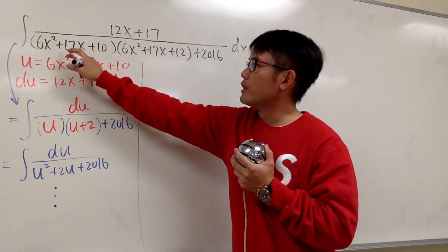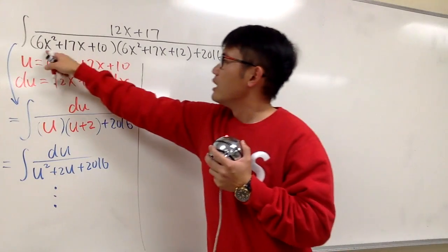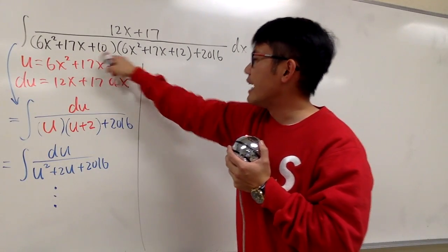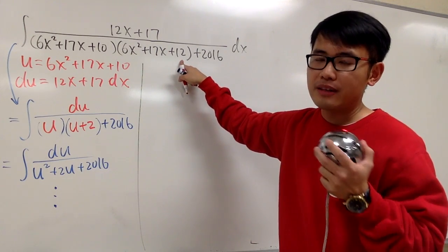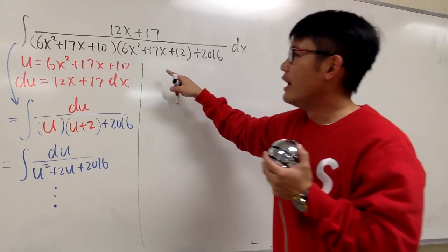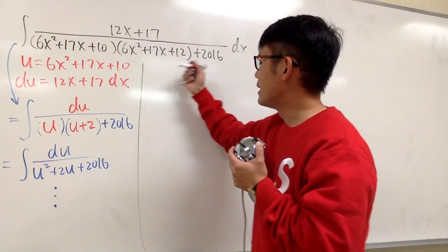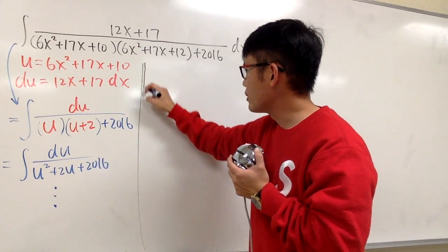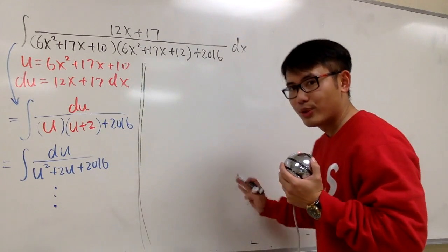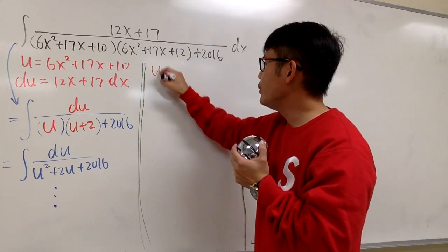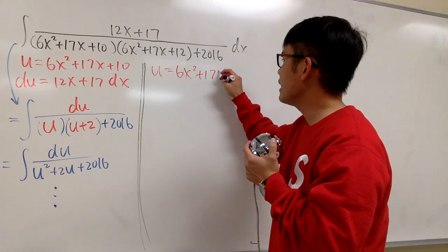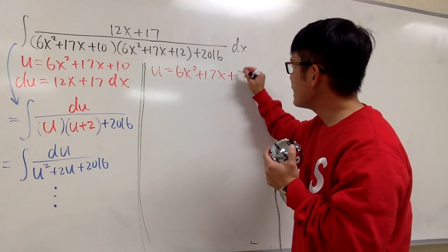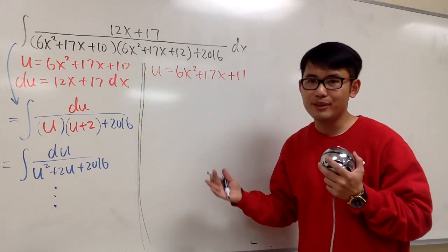Let me show you guys this way. Instead of letting u equal to the first parenthesis, notice that this and that, here we have plus 10, here we have plus 12. What's in the middle of 10 and 12? It's 11. I am going to let, so this is my alternative way, so I'm going to just draw another line. I am going to let u equal to 6x squared plus 17x plus 11 right here.